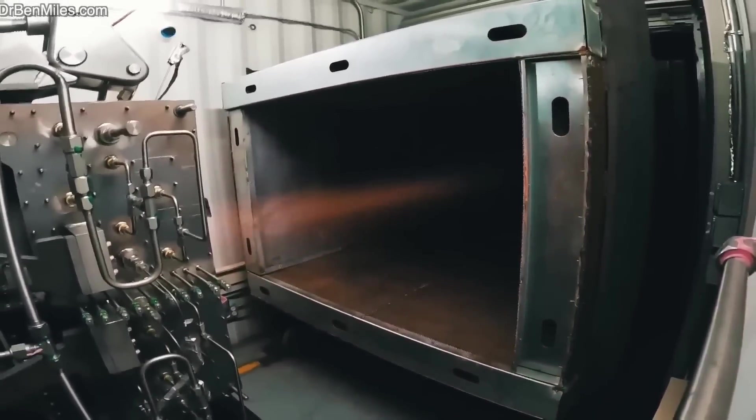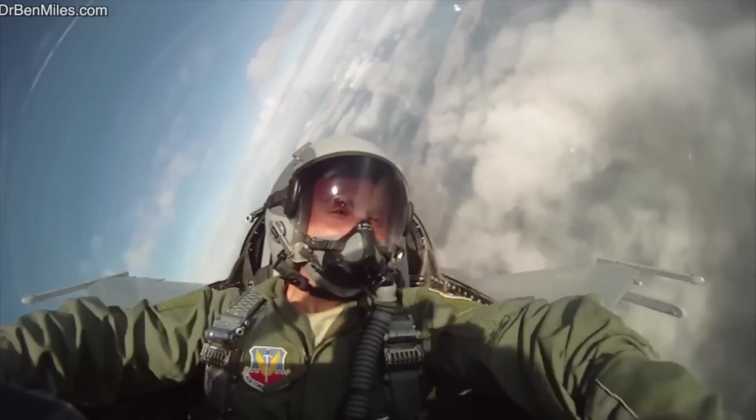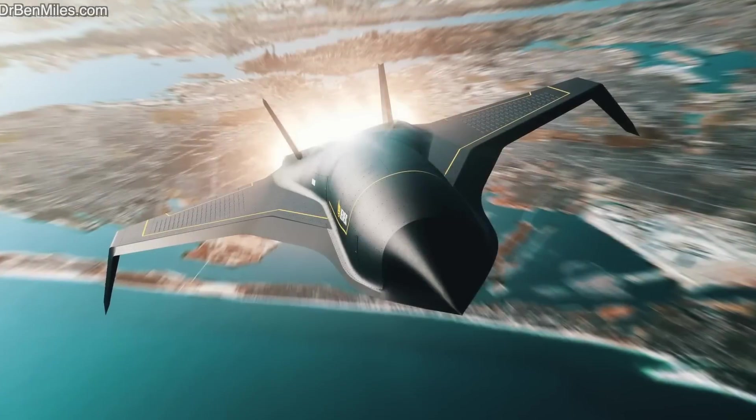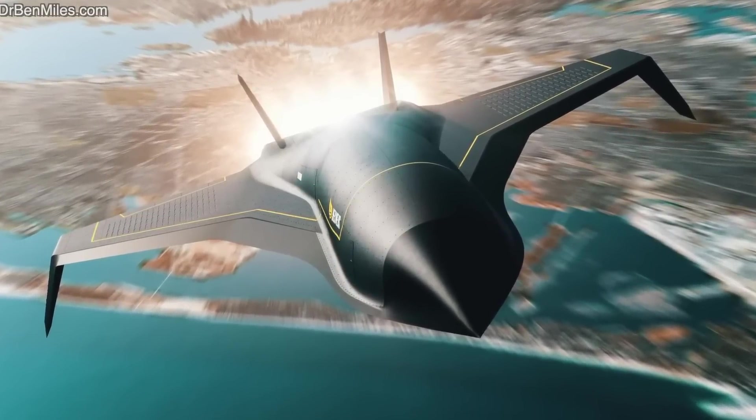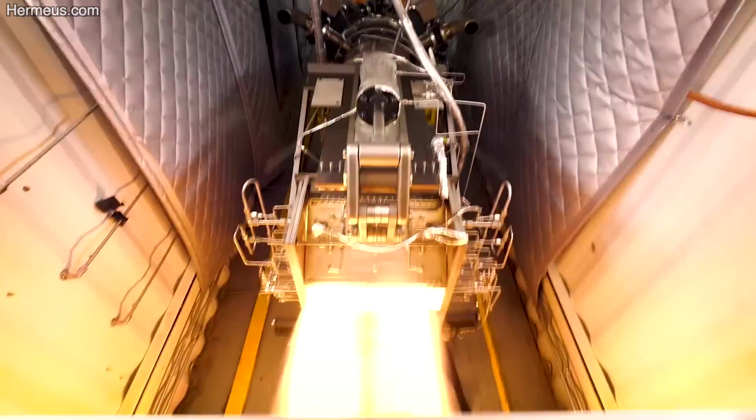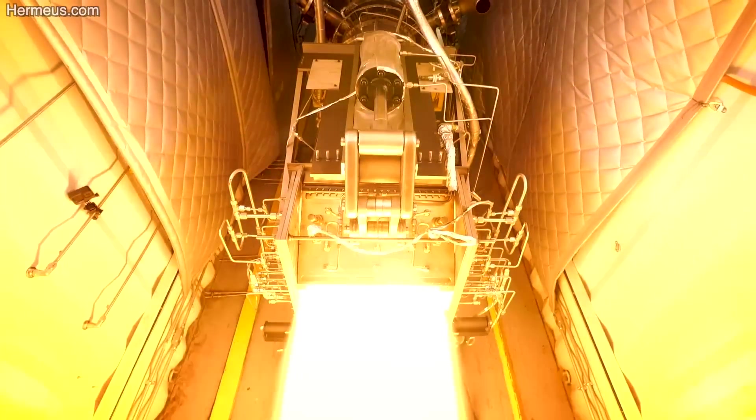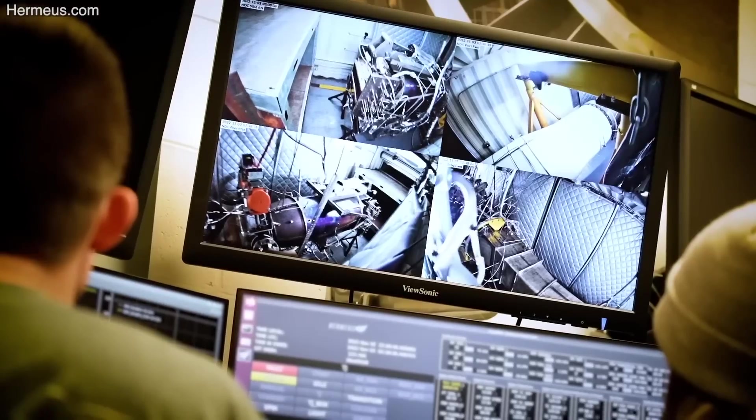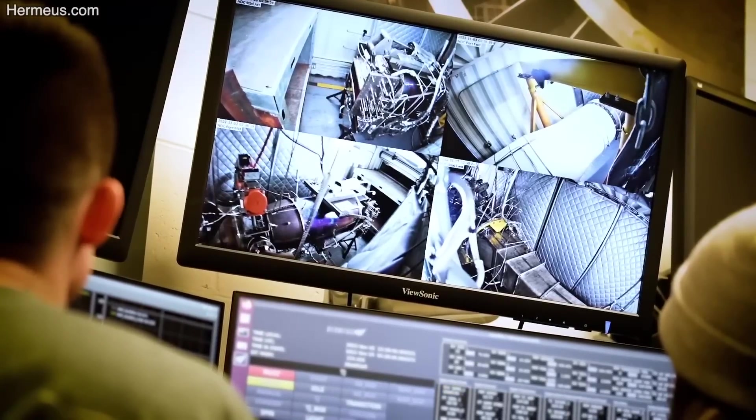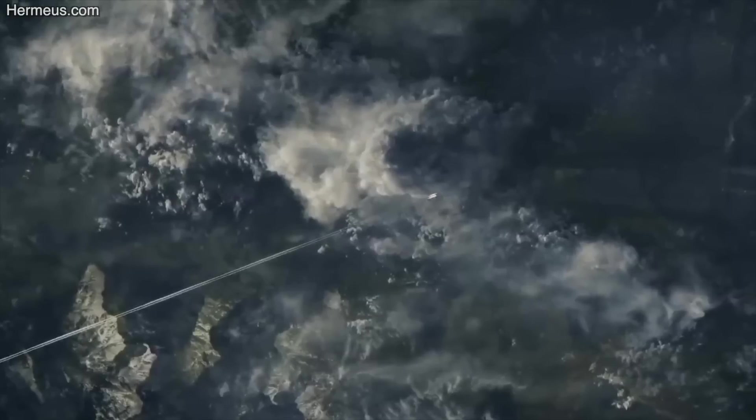The challenge then became switching the engine from turbojet mode, Mach 0 to 3, to ramjet mode, Mach 3 to 5. Integrated propulsion testing was conducted to determine whether the design could insulate the turbojet from the intense heat generated by the ramjet during high-speed cruising at inlet temperatures of about 1,800 degrees Fahrenheit.